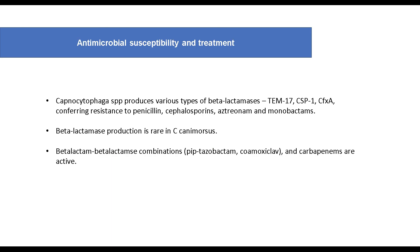Capnocytophaga species produce various types of beta-lactamases — TEM-17, CSP1, CFXA, etc. — conferring resistance to penicillin, cephalosporins, aztreonam, and monobactams. Beta-lactamase production is rare in Capnocytophaga canimorsus, which is responsible for most serious infections. Beta-lactam/beta-lactamase inhibitor combinations, for example piperacillin-tazobactam or coamoxiclav, and carbapenems are considered appropriate antibiotic choices.